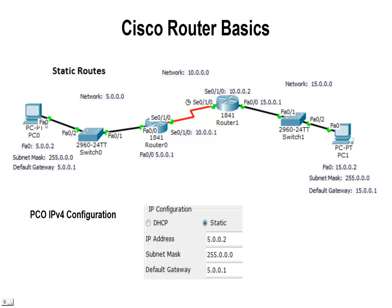Looking at that first PC, PC0, we're going to go ahead and configure it for IPv4. We're using static, and we're going to set the IP address of 5.0.0.2 on the network 5.0.0.0. We have three networks here: the first network between PC0 and the router; the second network, 10.0.0.0, between the two routers on a serial line; and a third network, 15.0.0.0, between router 1 and PC1. Back to the IP configuration for PC0 — we're using address 5.0.0.2, reserving 5.0.0.1 for the router, as gateways are usually reserved with that first IP address in the network.